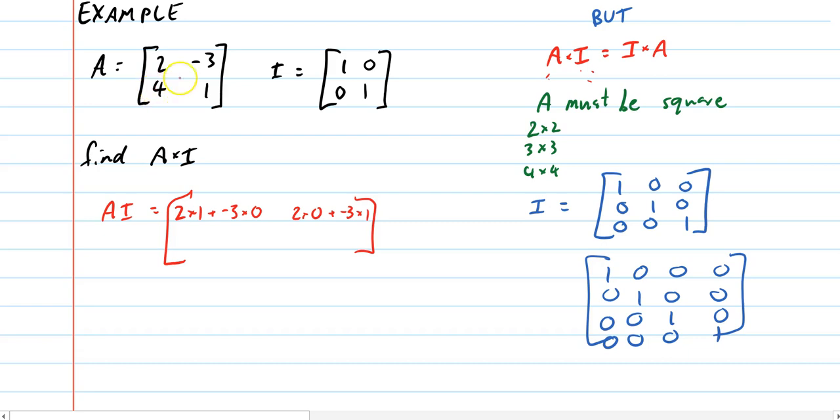Next bit's going to be 4 times 1 plus 1 times 0. And the next element's going to be 4 times 0 plus 1 times 1. And watch what happens here. 2 times 1 is 2, and then this bit just doesn't happen at all. So I get an answer of 2.